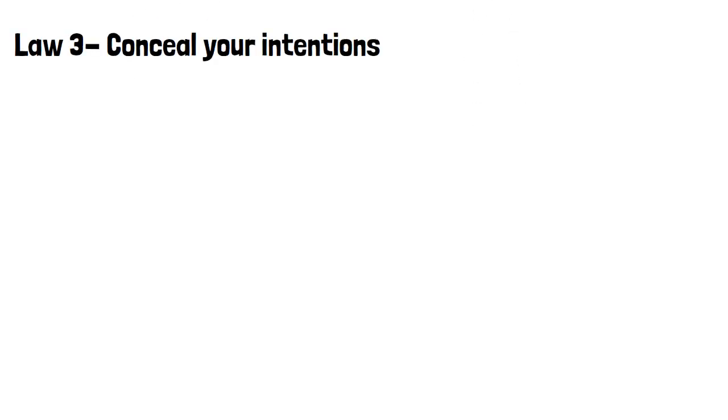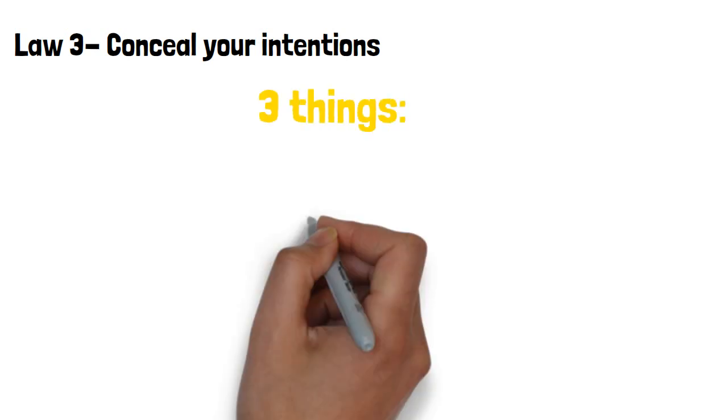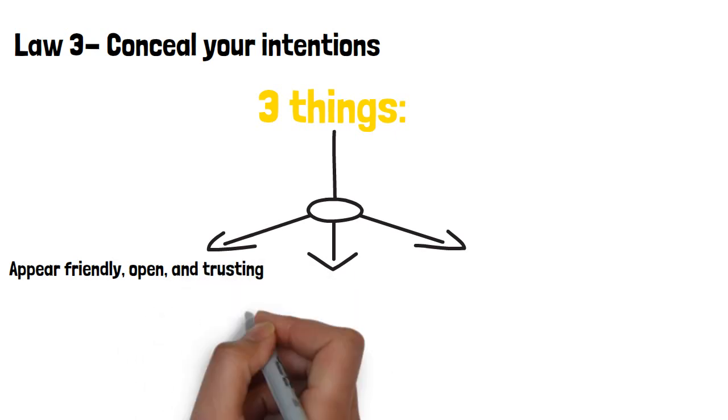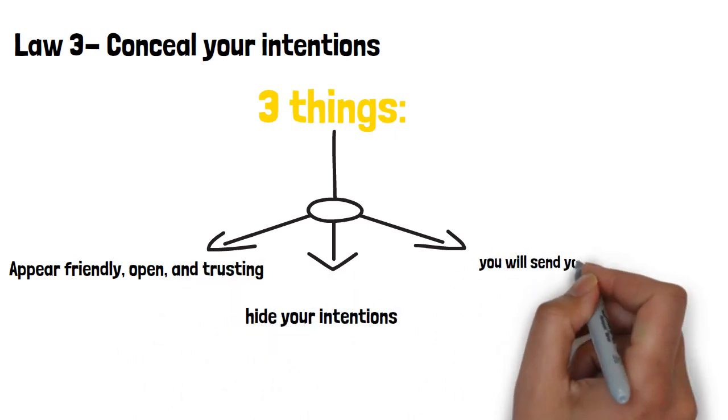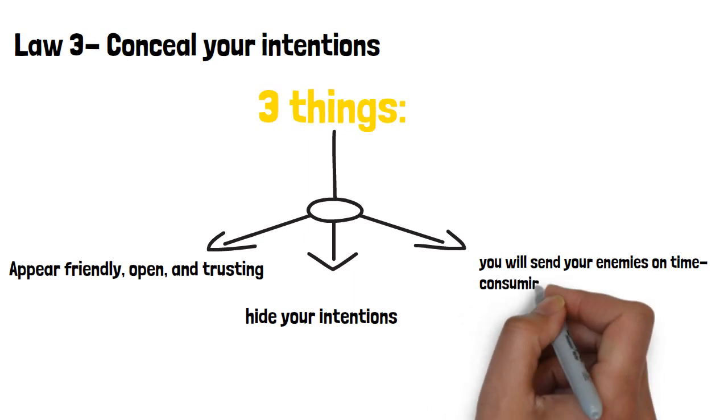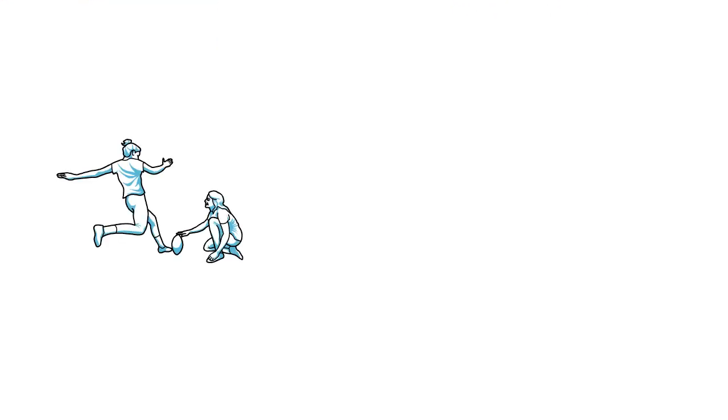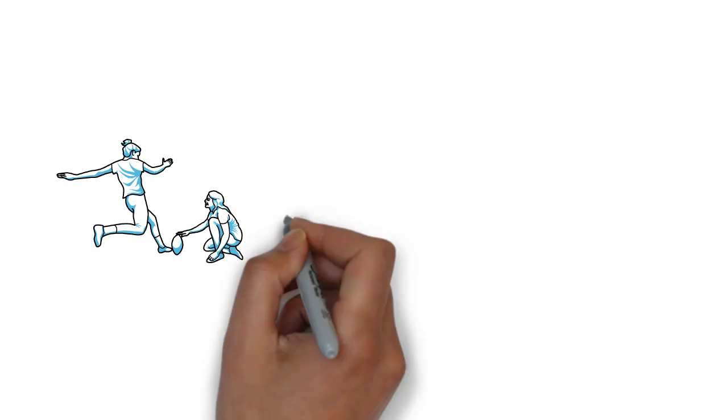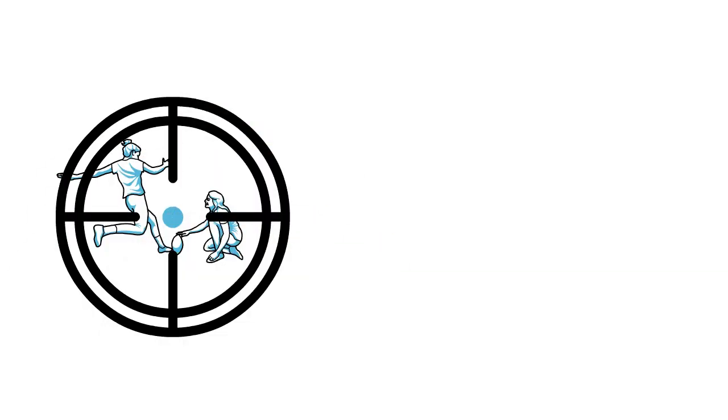Law 3, conceal your intentions. Hide your intentions, but not by closing up, but by talking endlessly about your desires and goals, just not the real ones. By this, you'll achieve three things. One, appear friendly, open and trusting. Two, hide your intentions. And three, you will send your enemies on time-consuming wild goose chases. Distract your rivals. This comes as a simple fact. People can only focus on one thing at a time. It will be hard for them to think that the unexciting and harmless person they are dealing with is at the same time planning something else.